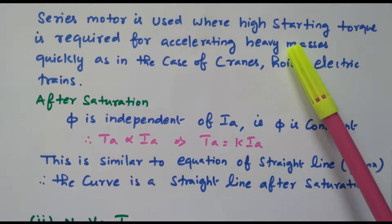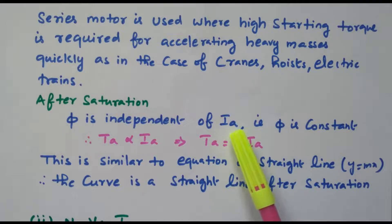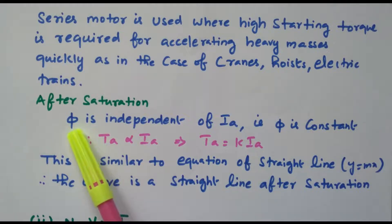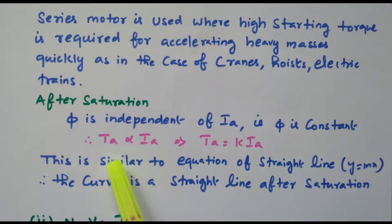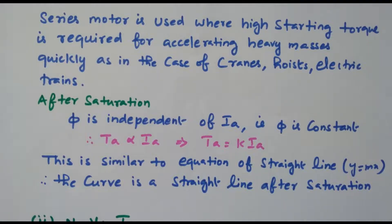It is always started under loaded condition — that is a very important point. After saturation, meaning once the machine has attained full speed, φ becomes independent of I_A. Once saturation is reached, I_A and φ are independent, so φ is almost constant. In that case T_A is directly proportional to only I_A: T_A = K·I_A. This is similar to the equation of a straight line, so the curve becomes a straight line after saturation. Before saturation the curve is parabolic; after saturation it becomes a straight line.